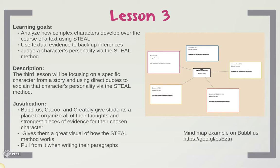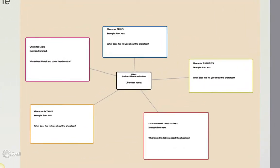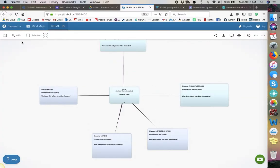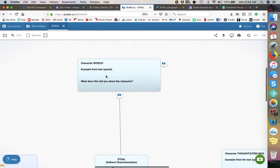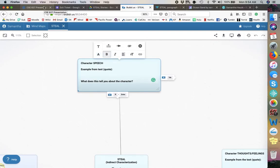These mind mapping tools give students a place to organize all of their thoughts and strongest pieces of evidence for their chosen character. It also gives them a great visual of how the STEAL method works, and they will be able to go back to this tool and pull from it when writing their paragraphs. All of these mind mapping tools are available for Chrome since Chromebooks are the popular choice for classrooms. This mind map I did using Poplet — that's only available for iOS but it's really simple. Students just click each box and type directly into it; there's a place for their example from the text and what that tells them about the character. With bubble.us it's pretty much the same thing — the character name goes in the center and you can just click and instantly type. Really easy, a great way for them to organize their thoughts about the characters.